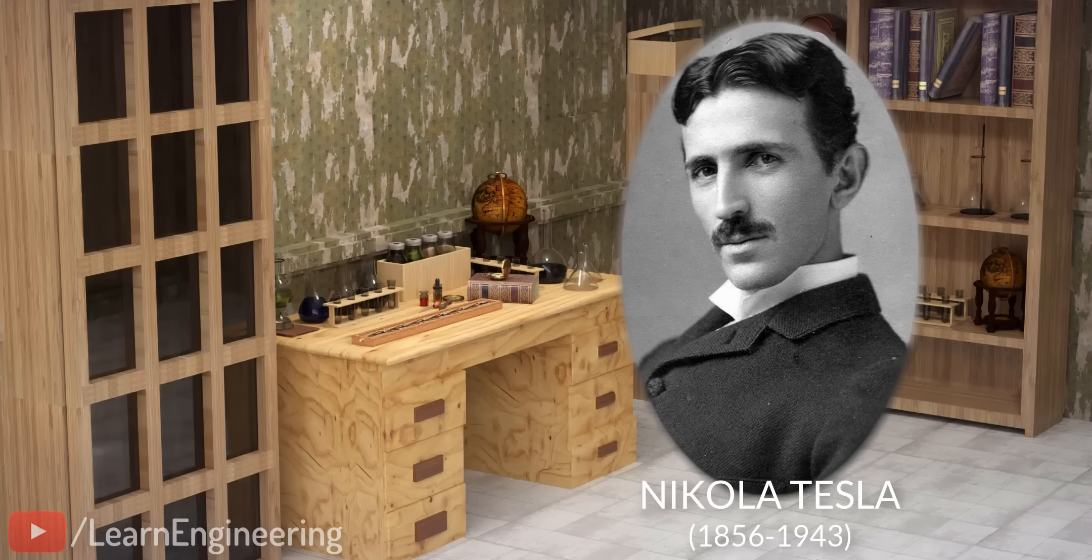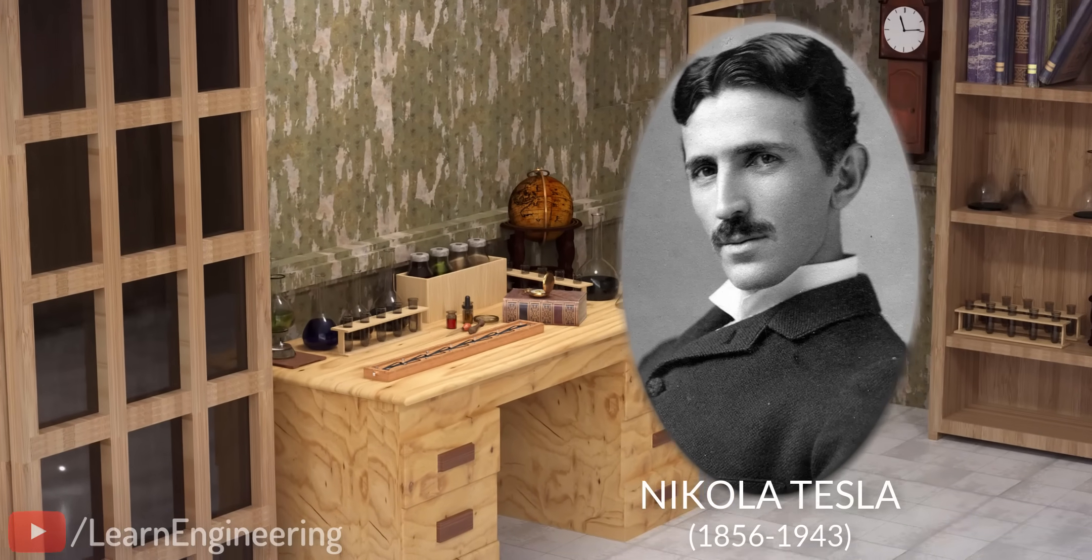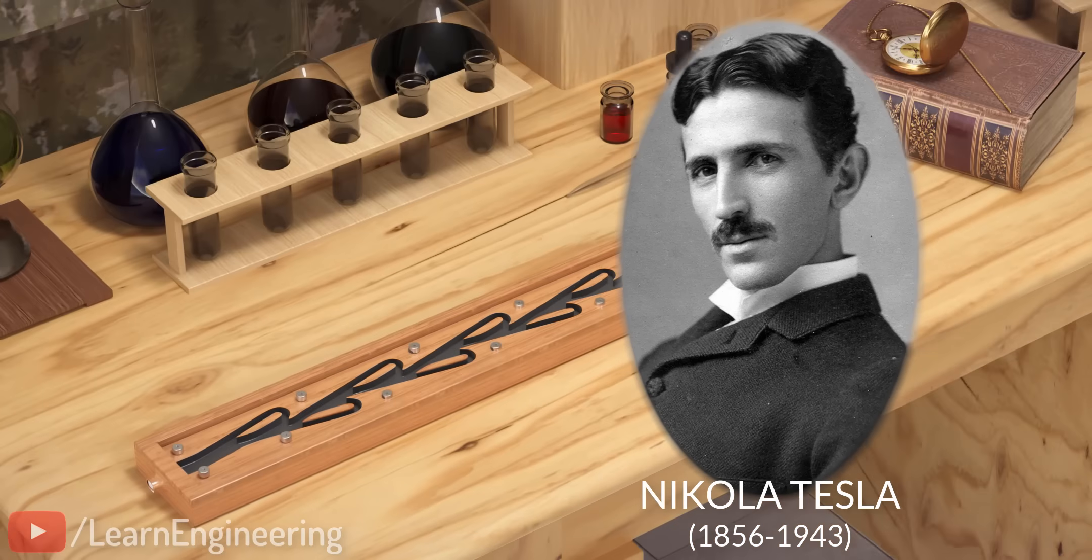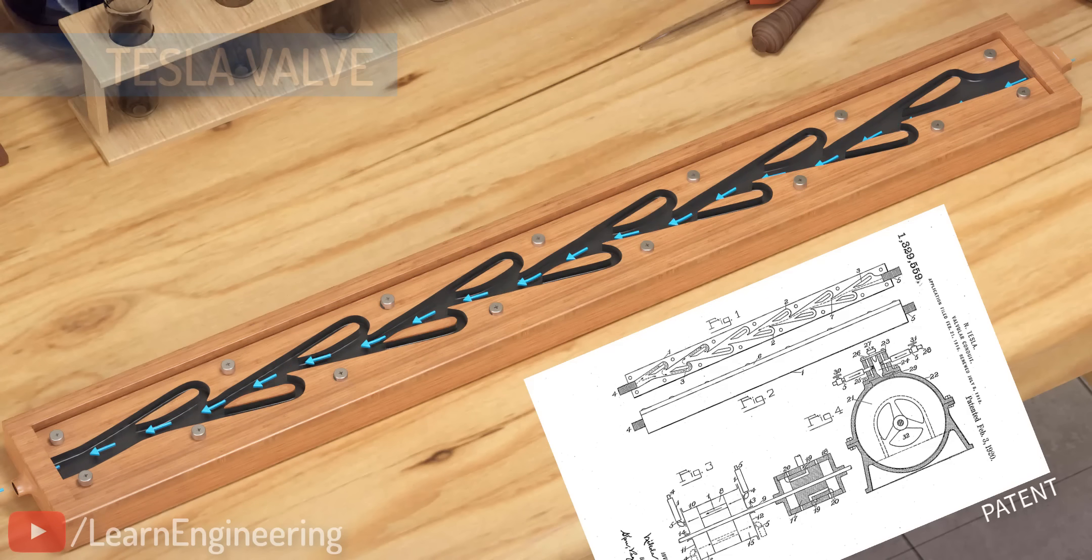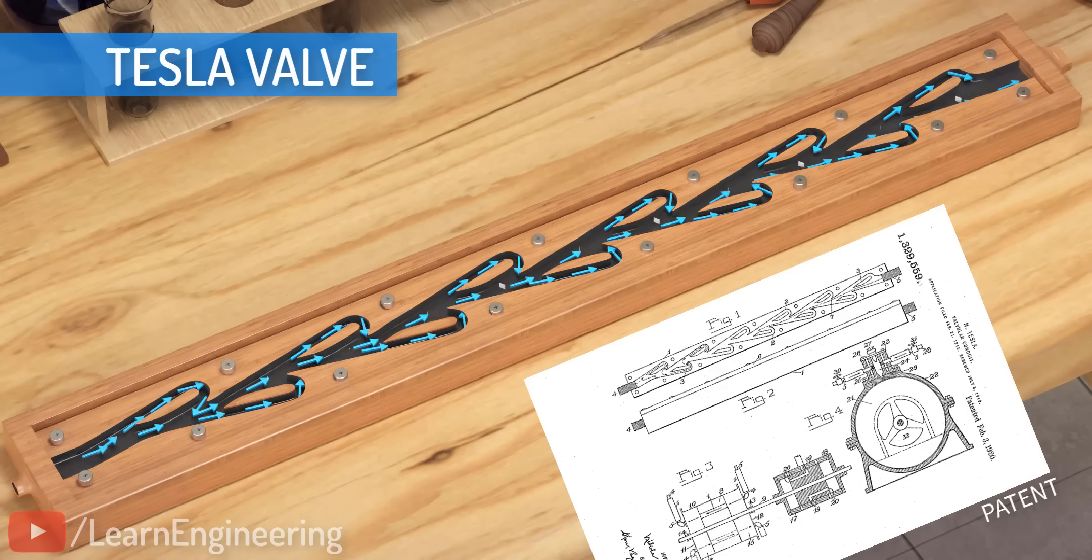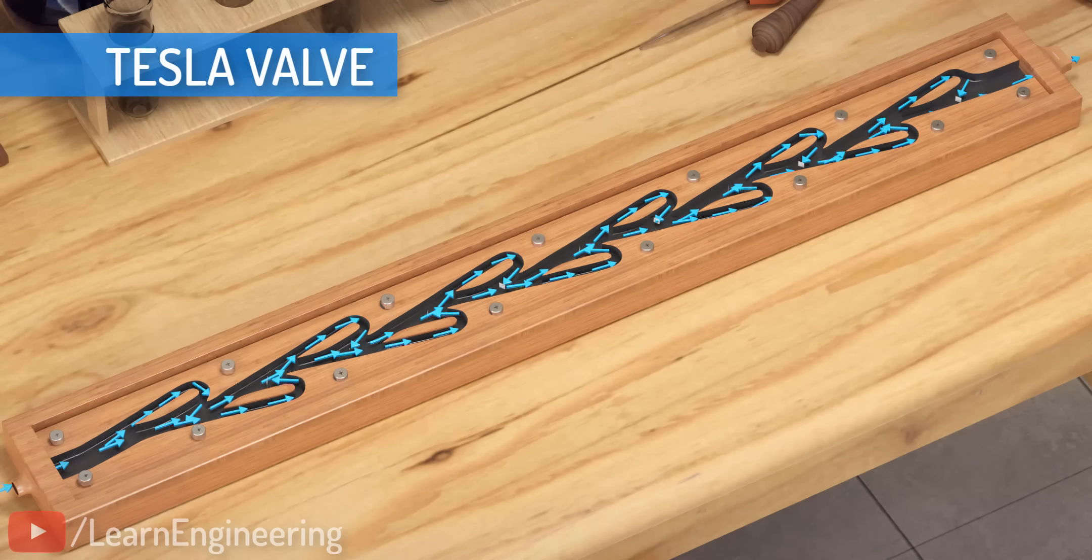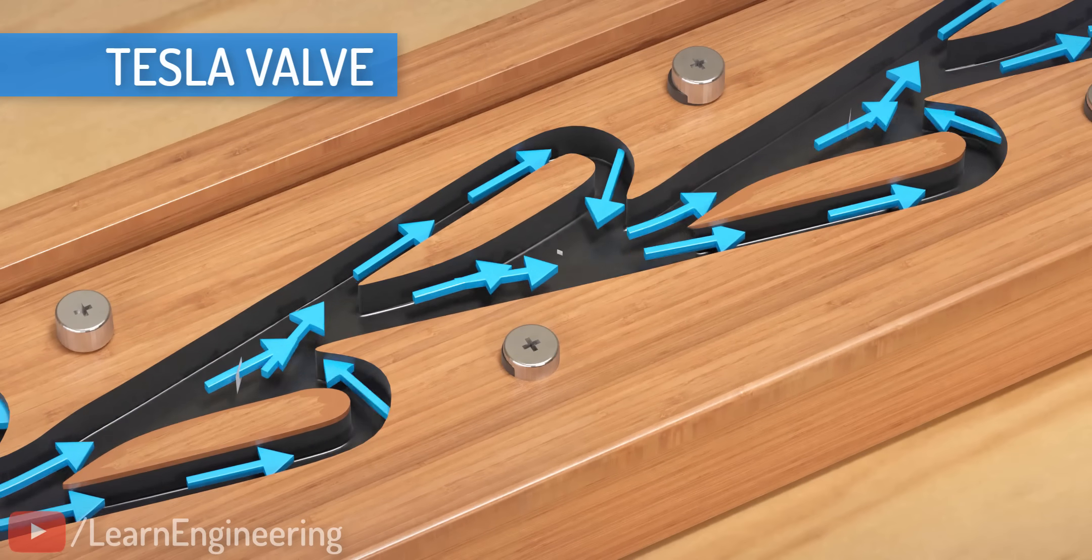Nikola Tesla has developed a one-way valve without any moving parts. In his patent, he named this valve a valvular conduit. In this video, we won't only learn the workings of this valve, we will make an attempt to understand how Tesla's mind worked during the development of this brilliant product.